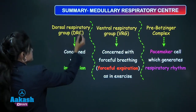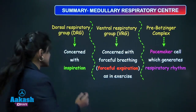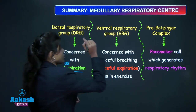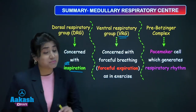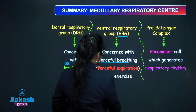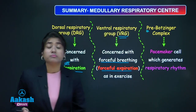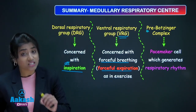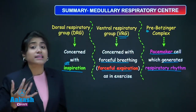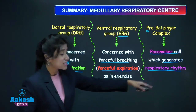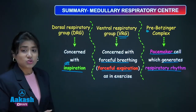Let us talk about their functions quickly. Dorsal respiratory group of neurons — they are mainly concerned with inspiration. Ventral respiratory group of neurons — they are concerned with forceful expiration, forceful breathing, like in exercise. Pre-Bötzinger complex is the pacemaker cell of respiratory rhythm generation; it gives the ramp signal. So, respiratory rhythm is by pre-Bötzinger complex, forceful expiration by ventral respiratory group, and inspiration by dorsal respiratory group.